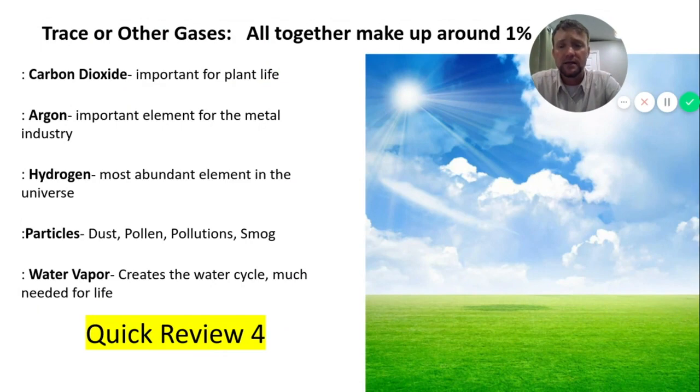The very last thing here is trace or other gases also just called trace gases. This makes up about 1% and it depends on where you are on the planet. What some of these trace elements might be, carbon dioxide will definitely be a part of that, but you can see I went through some other ones. Argon, this is an element that's going to be needed. Argon is an important element for the metal industry. It is used for creating different types of metal. Hydrogen is another one. Hydrogen being the most abundant element in the universe. And definitely particles. And we went over that a couple slides ago, but dust and pollen and different pollutants and smog and soot. The last one is water vapor.